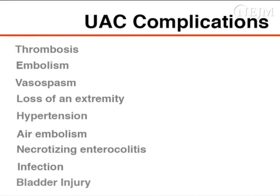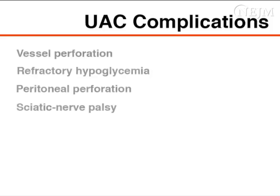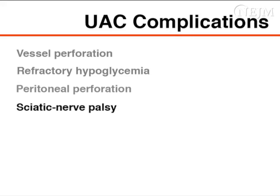UACs can cause or be associated with multiple complications, including but not limited to thrombosis, embolism, vasospasm, loss of extremity, hypertension, air embolism, necrotizing enterocolitis, infection, and bladder injury. If malpositioned, these catheters can result in vessel perforation, refractory hypoglycemia, peritoneal perforation, and sciatic nerve palsy.